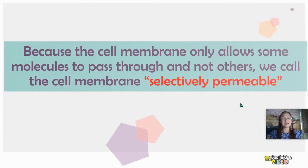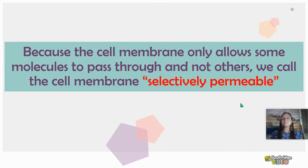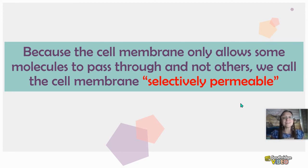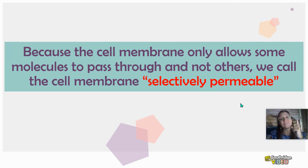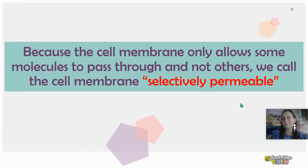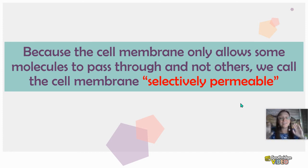When we use the term selectively permeable — sometimes called semi-permeable — we mean the cell membrane controls what enters or leaves the cell, and that some things can cross while others can't. In this video, oxygen, carbon dioxide, and non-polar molecules can cross, but ions, glucose, and polar molecules can't simply cross by diffusion — they need particular protein channels. Therefore the cell can regulate what can enter or leave. That concludes my video on membrane transport.